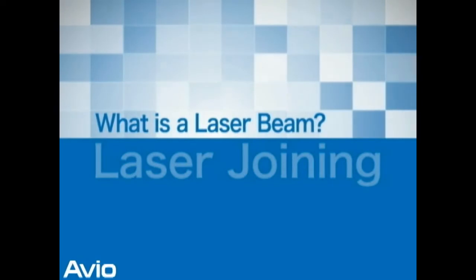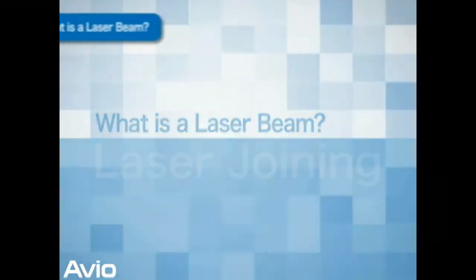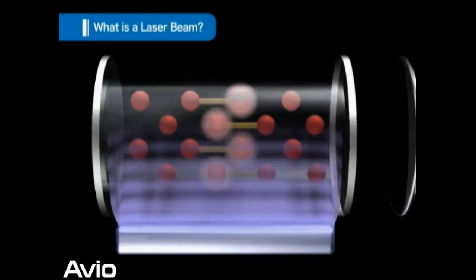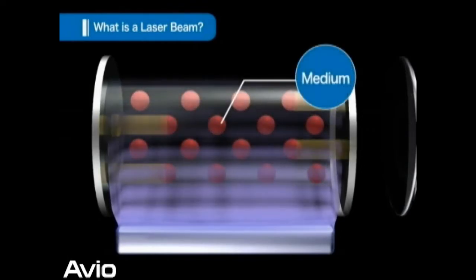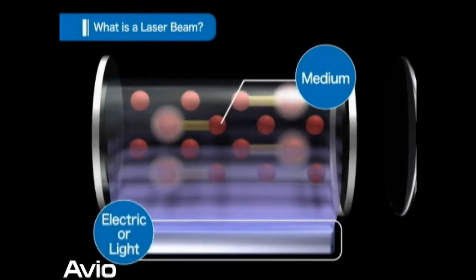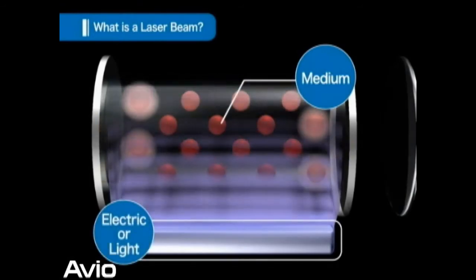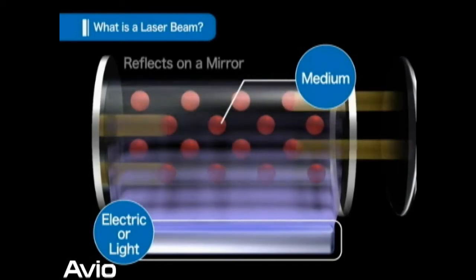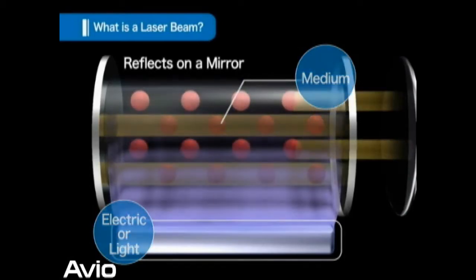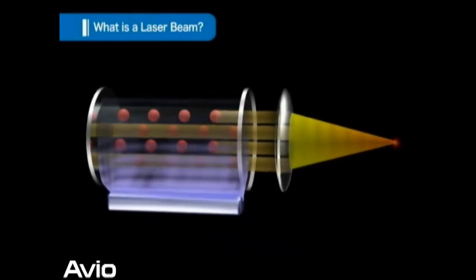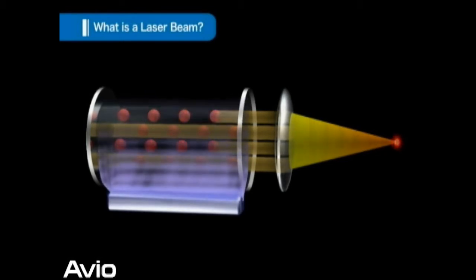What is a laser beam? As shown in the animation, when an energy such as electric or light is externally supplied to a substance called medium, the atom inside the medium will be put in a highly excited state, and then starts to emit a light one after another by induced emission. This is called the laser beam.